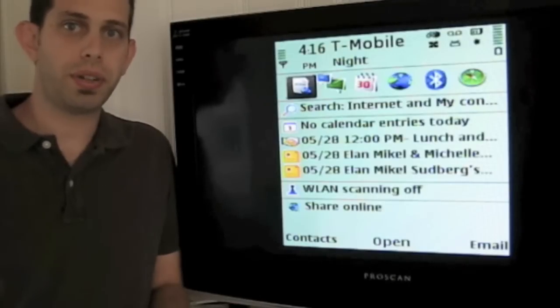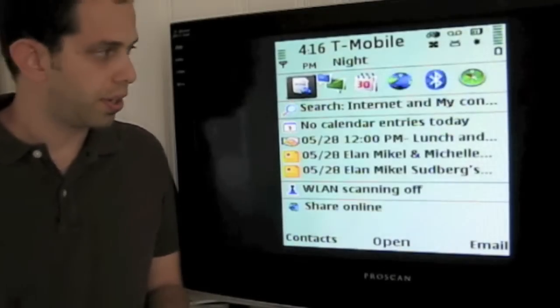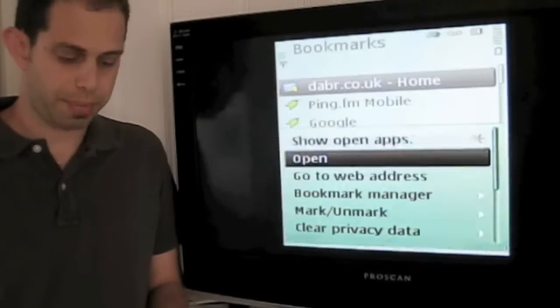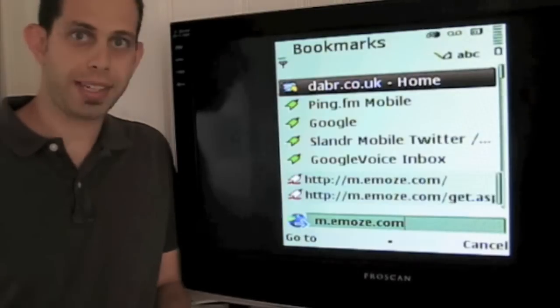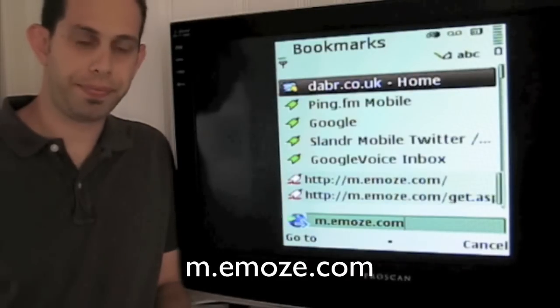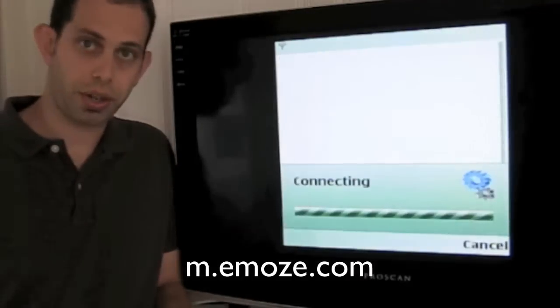First, what we'll do is hold down the zero to get us to the mobile browser. Go to options, go to web address, and put in m.emos.com. Hit go to.